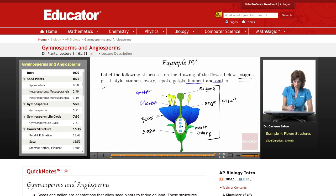These two combined are called the stamen, which is the male reproductive structure.